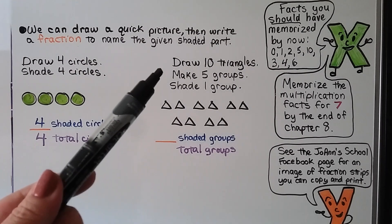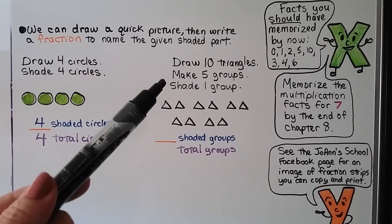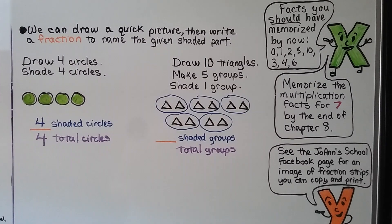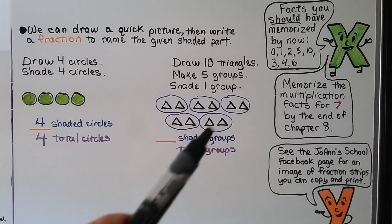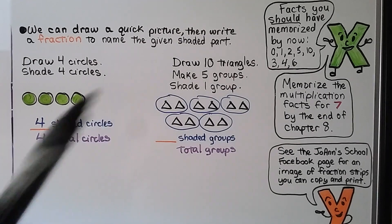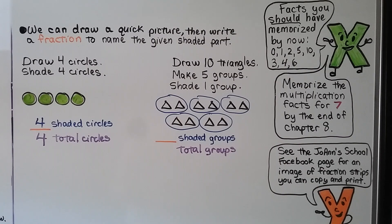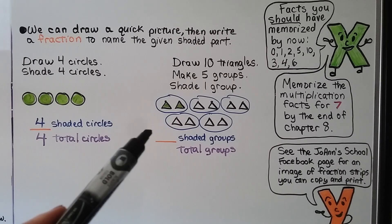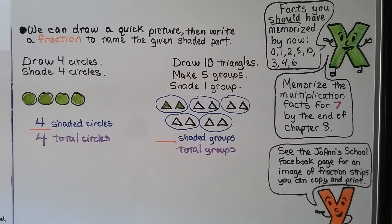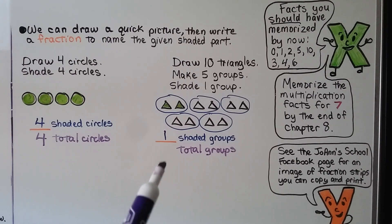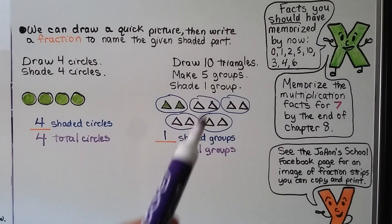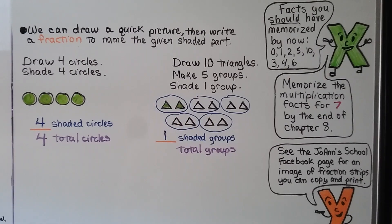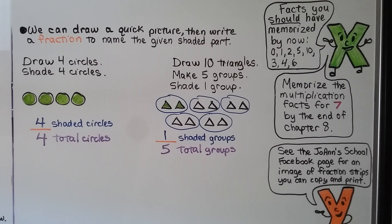We need to draw ten triangles, so I did, and make five groups, so we circle them into five groups. Now it tells us to shade one group, so I've shaded one group. We write our fraction: how many shaded groups — one — is our numerator. How many groups in all — five — is our denominator. It told us to make five, so our denominator is five. One fifth of the groups are shaded — one out of five.